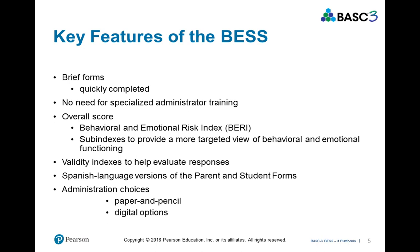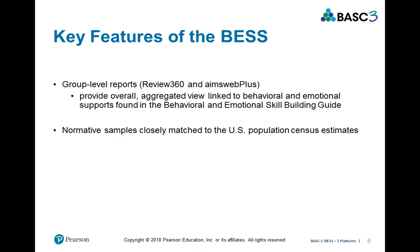There's a Spanish language version of the parent and the student forms. Administration choices are between paper and pencil or digital options. There's group-level reporting for the BESS, and that can be accessed within Review360 and AIMSweb Plus. The normative sample, which was collected in 2015 and published in the manual, closely matches the U.S. population.